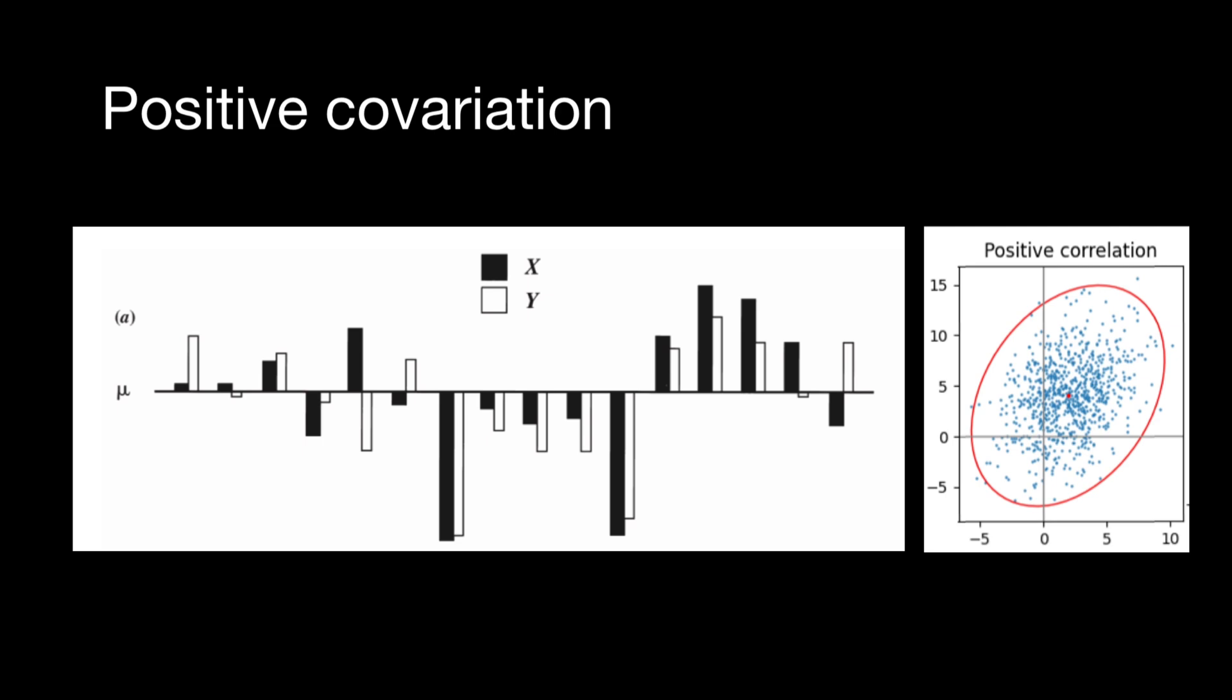Given the general pattern, however, we can say that in this population, X and Y exhibit strong positive covariation. And on the dot plot, we also see correlation between this data.